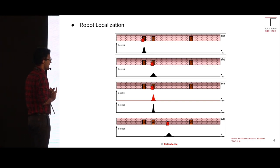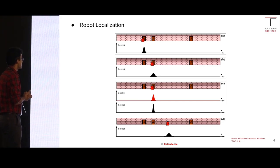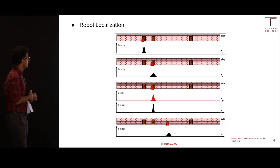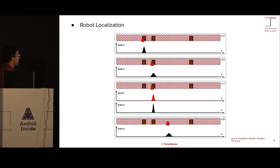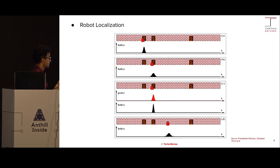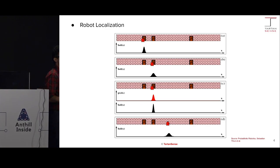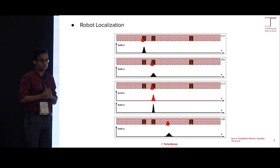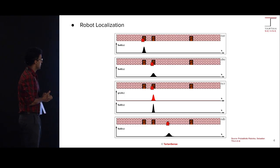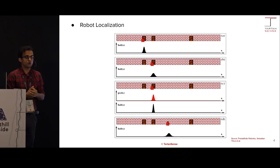Once the robot starts moving again, it becomes more uncertain of its own state due to motion, until it gets a new measurement. To reiterate: similar to the self-driving case, we have two steps. First is predict — assuming the robot moves at constant speed, we predict where it will be after five seconds. Then, when we get a measurement from the camera, we fuse that with the prediction to come up with a much better estimate of where the robot is.